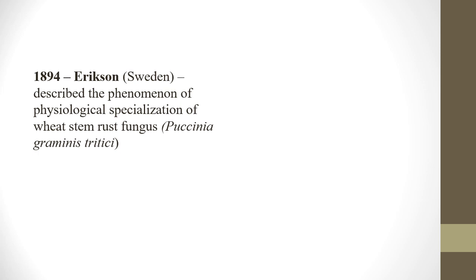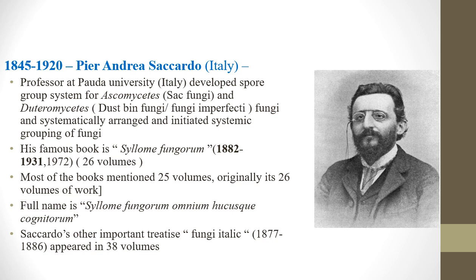Eriksson described the phenomenon of physiological specialization in wheat stem rust (Puccinia graminis tritici). P.A. Saccardo, an Italian scientist and professor at Padua University, wrote the famous 'Sylloge Fungorum,' comprising 26 volumes published between 1882 and 1931. The full name is 'Sylloge Fungorum Omnium Hucusque Cognitorum.' He also contributed 'Fungi Italici,' published in 38 volumes between 1877 and 1886.